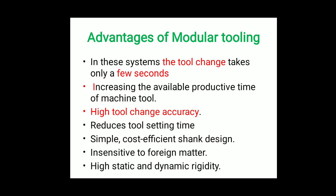Advantages of modular tooling: tool changes take only a few seconds, which increases the available productive time of the machine tool. It achieves high tool change accuracy, reduces tool setting time, and features a simple and cost-efficient shank design. It is insensitive to foreign matter and provides high static and dynamic rigidity.